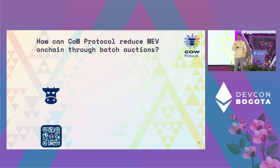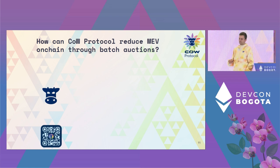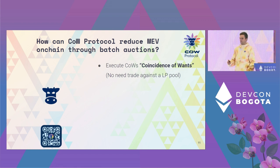How do we actually reduce on-chain MEV through batch auctions? The goal is to reduce overall interactions with AMMs, and if we must go to AMMs, we try to diminish the level of exposure those trades have against MEV by applying certain rules to batch auctions. The main way to reduce MEV is executing Coincidence of Wants. Because you don't need to trade against a liquidity pool and trades are completely peer-to-peer, there is no matter of order for those transactions - it's a pure simple transfer between two parties, and no one can get in the middle.